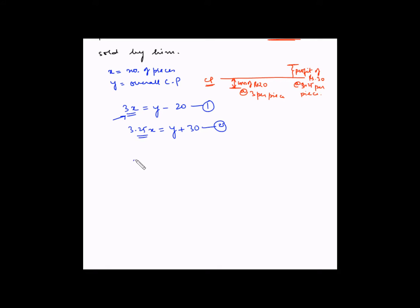So from the first equation 3X is equal to Y minus 20. Let's bring Y on one side and everything else on the other side. We will bring this 20 on this side. It has a negative sign, it will become positive when we bring it on the other side. So 3X plus 20 is equal to Y.